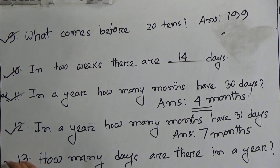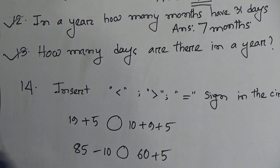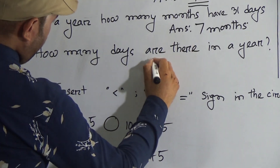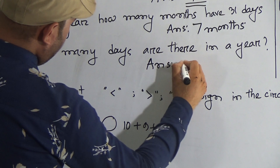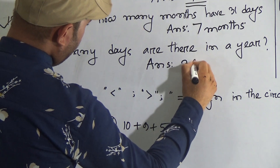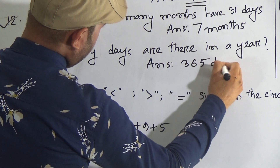Question number 13: how many days are there in a year? In a year there are 365 days.